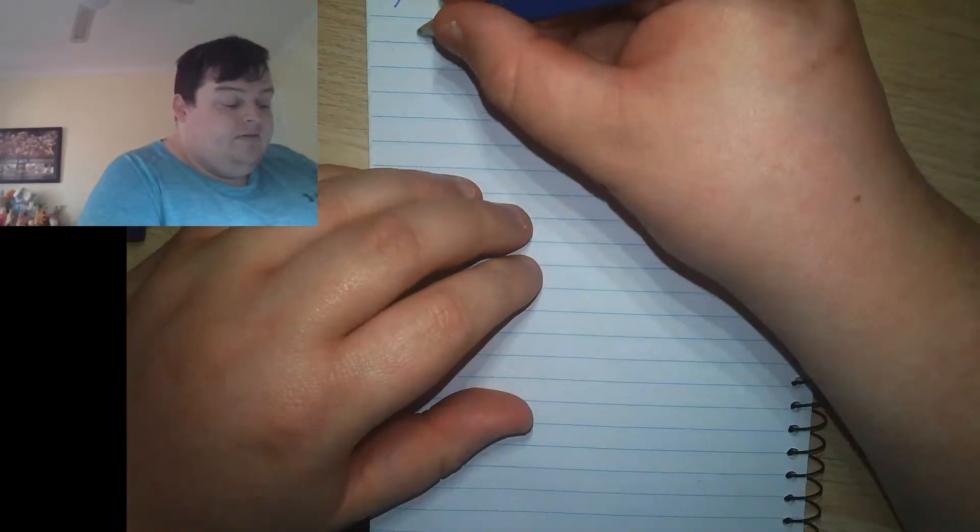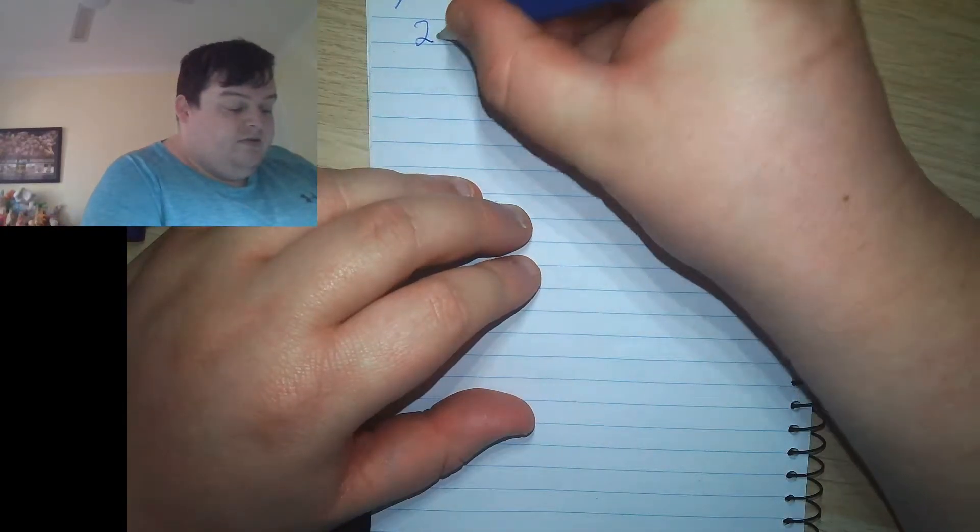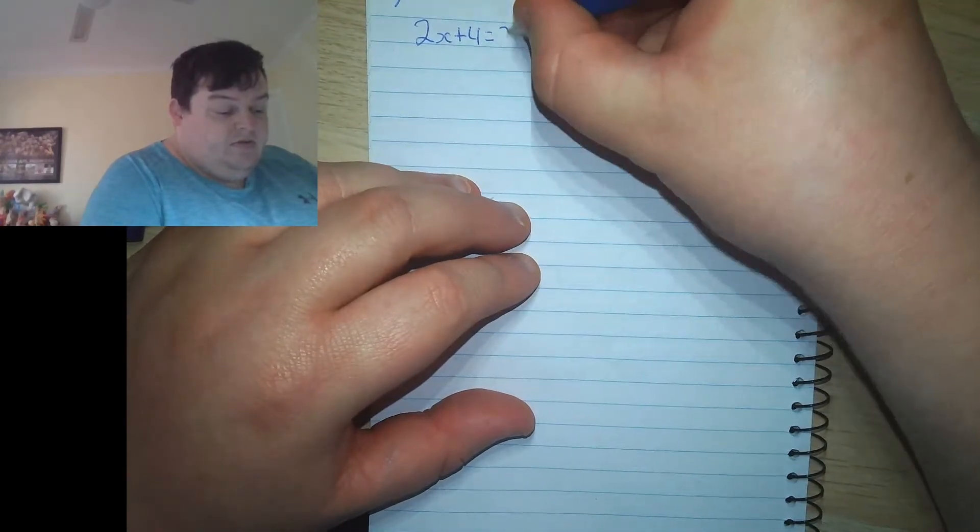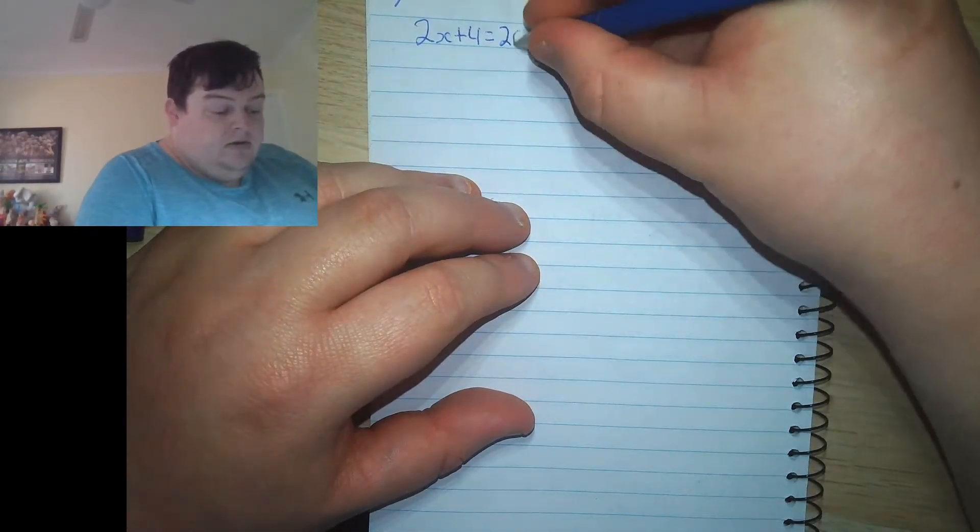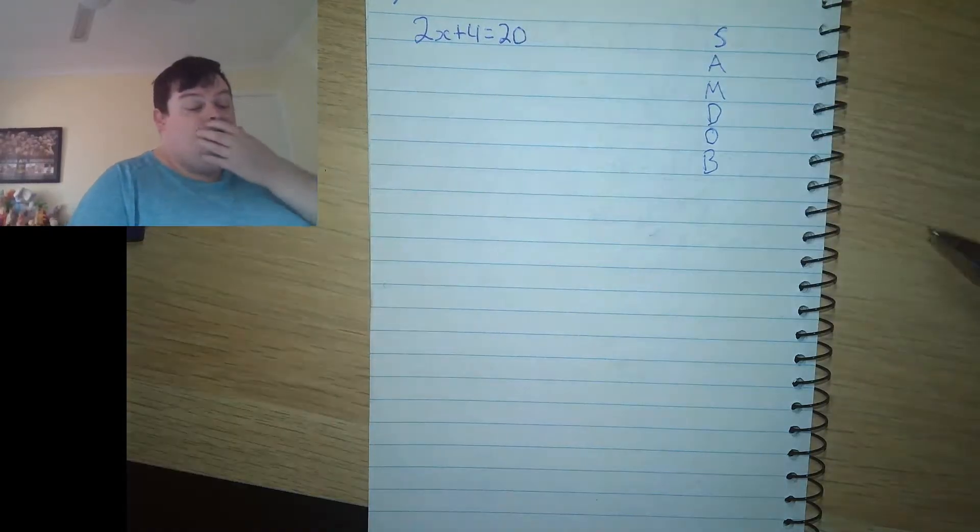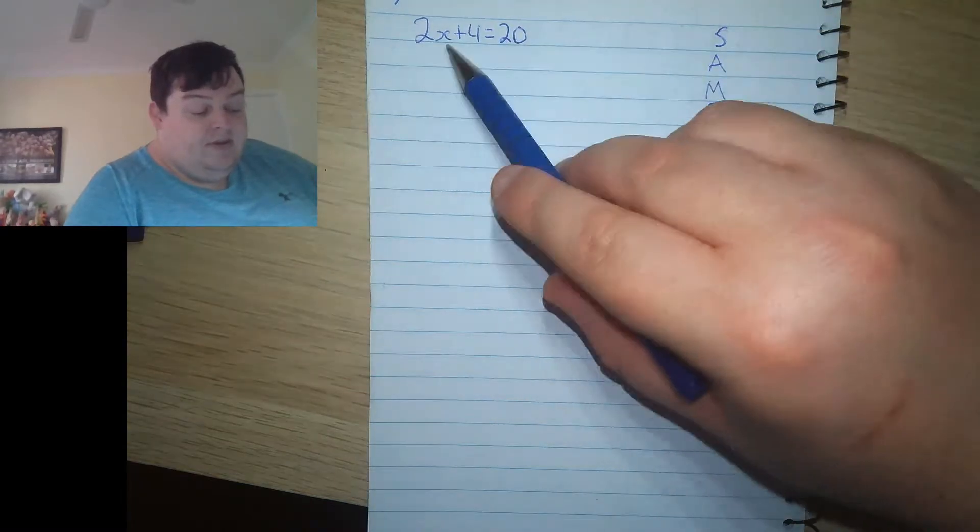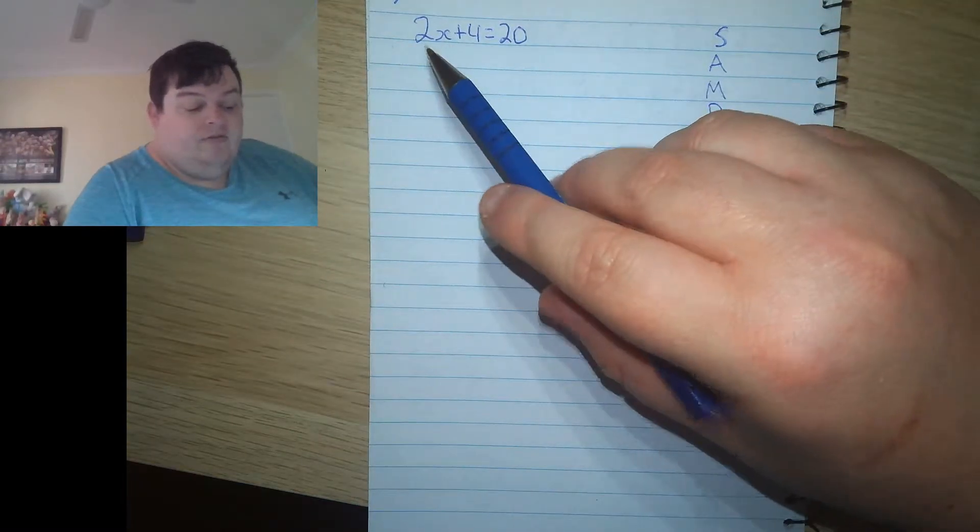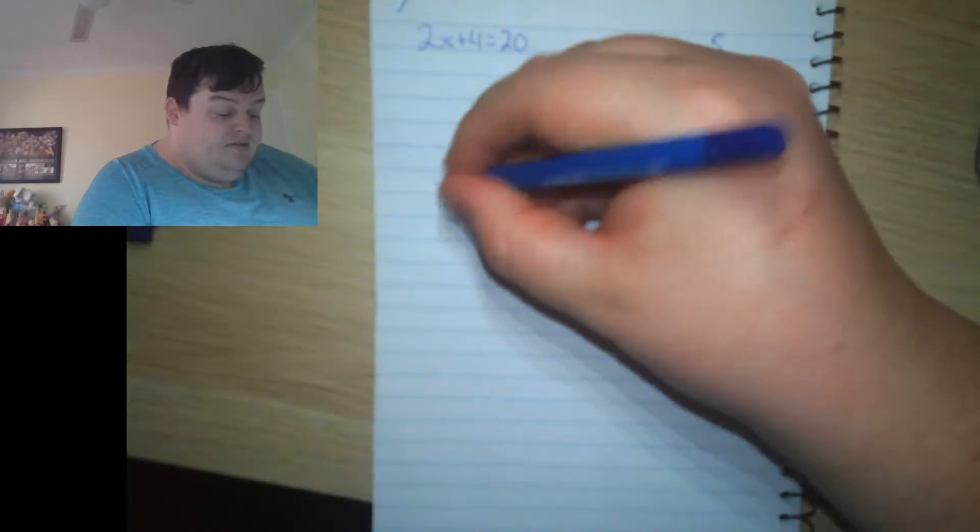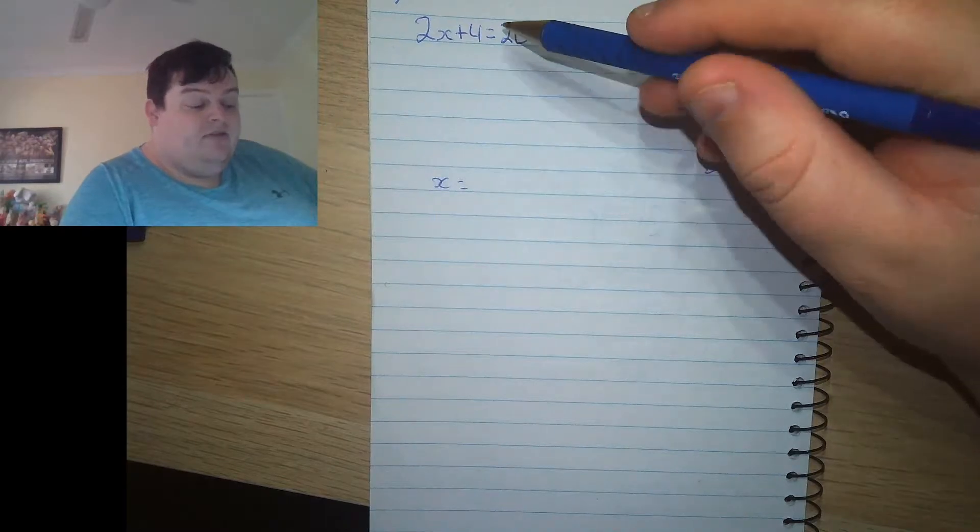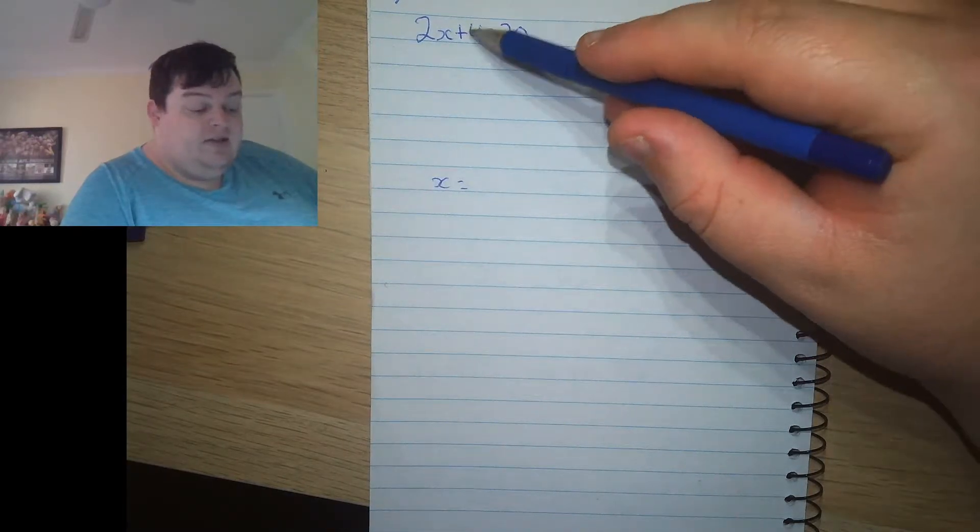Let's do an example. Let's say we have an equation that was something like this. 2x plus 4 equals 20. What I'm going to do is I need to undo all the changes that have been made to this x and get it into a form that will just be like x equals some answer. And to do that, I need to do the inverse operations of the things that are attached to it.